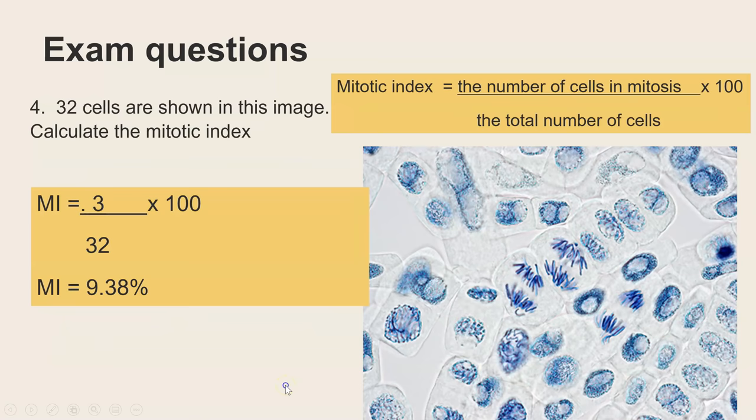So then if we have a look at an example of the mitotic index there's 32 cells in this image calculate the mitotic index so they've told us already there's 32 so you don't have to spend lots of time counting every single individual cell and instead you're just looking to identify which cells that are visible are currently in a stage of mitosis and having a look it's just these three which all happen to be in anaphase those chromatids are being pulled to opposite poles of the cell so that's 3 divided by 32 times 100 which is 9.38.